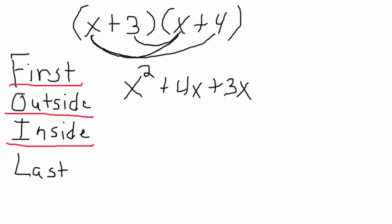And finally, we're going to use the L, which means the last — meaning the last numbers in each parentheses. The 3 with the 4. 3 times 4 gives us 12.